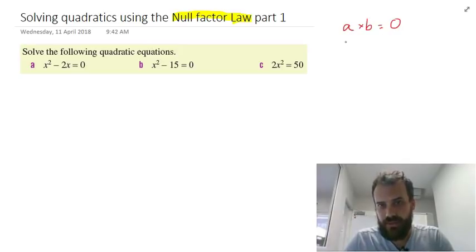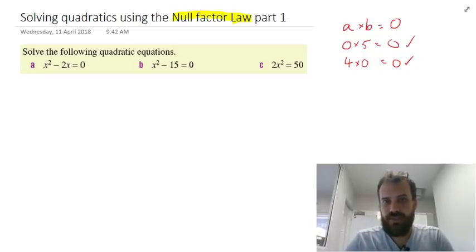In other words, it might be like zero times five, that would be equal to zero. Or it could be maybe a is four, in which case b must be equal to zero. Four times zero would also be equal to zero. So the Null Factor Law just says that a times b equals zero.